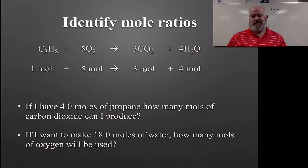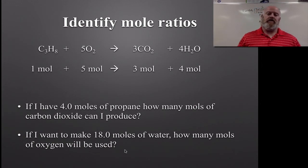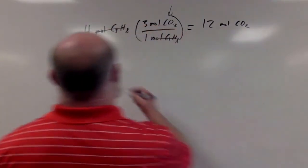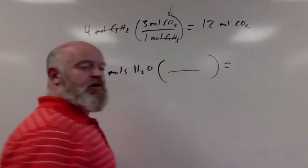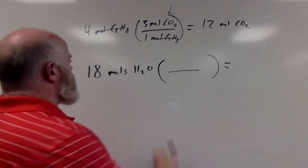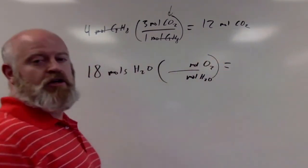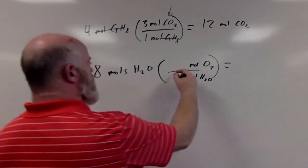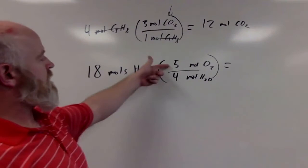You might be thinking that's a lot of work for just taking something times 3, and I agree with you. But what gets tricky is when things don't line up as easy with the math. The next one isn't hard yet but isn't quite as easy. If you want to make 18 moles of water, how many moles of oxygen will be used? We know moles of water we want to cancel, and we want to figure out moles of oxygen. We go back to our balanced chemical equation. For water it's 4, and for oxygen it's 5.